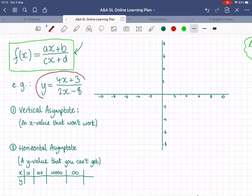Okay, so this is our example. Can we graph y equals 4x plus 3 over 2x minus 8? Okay, well, I'm just going to tell you that there's going to be a vertical asymptote and a horizontal asymptote.